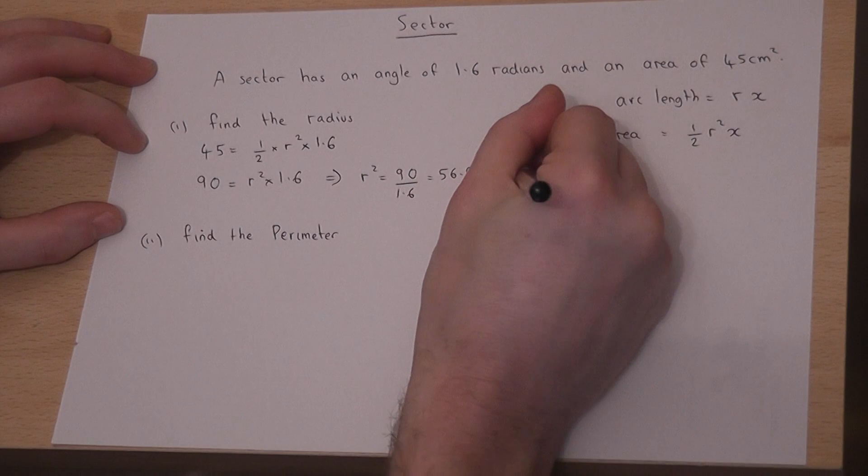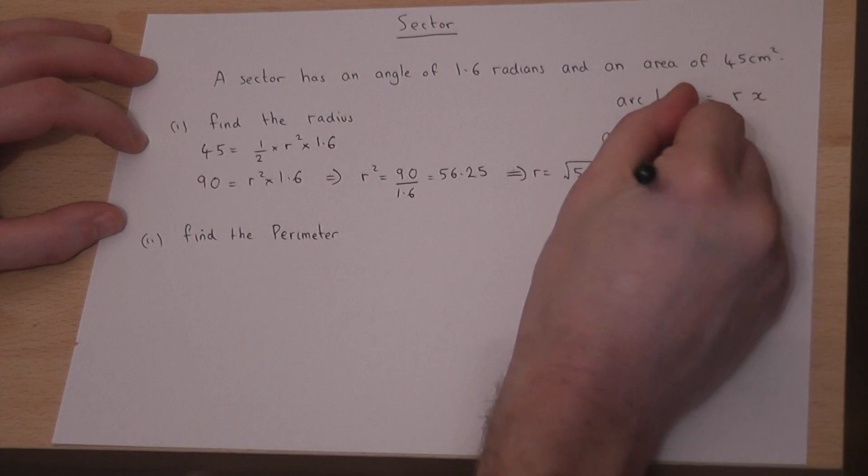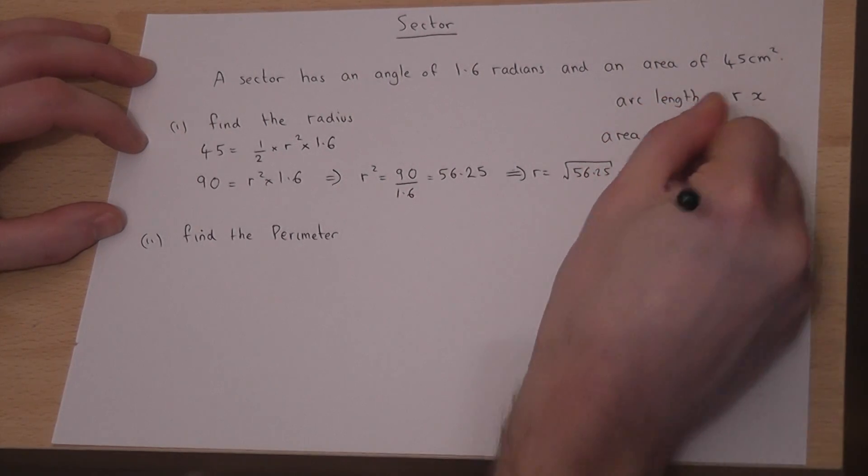To find r, I take the square root of 56.25, which works out at 7.5 centimeters.